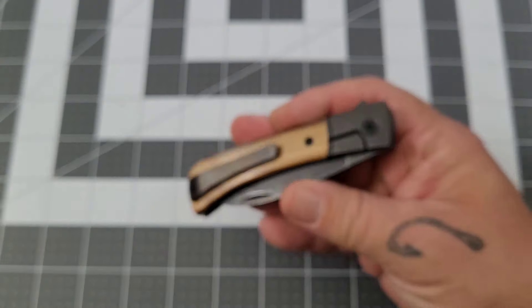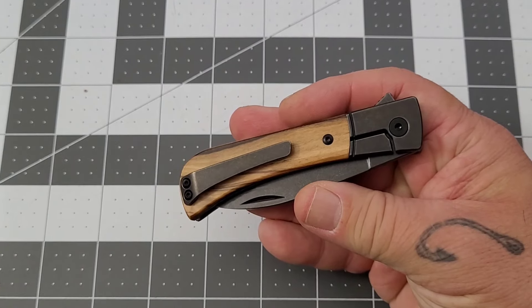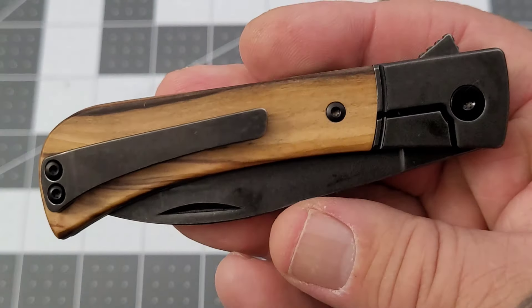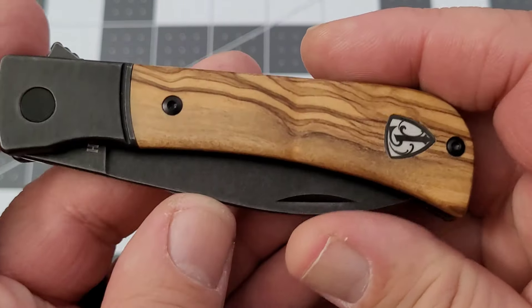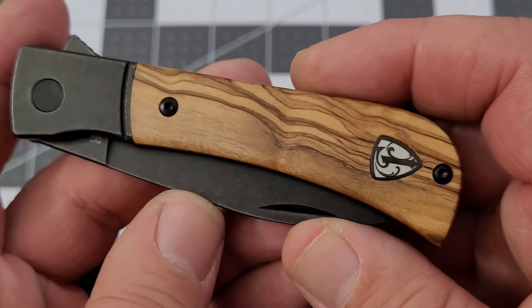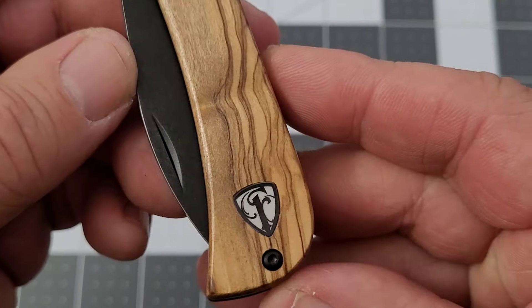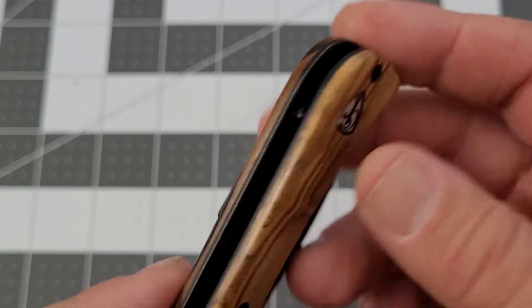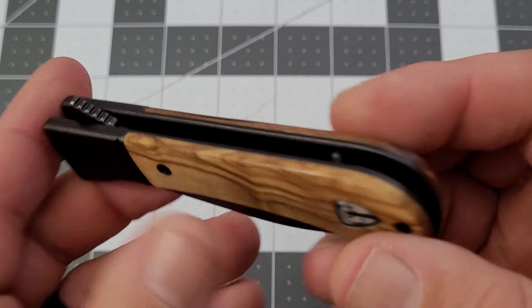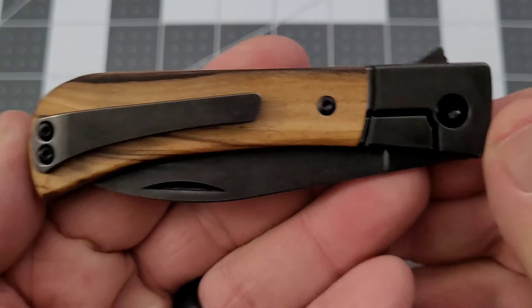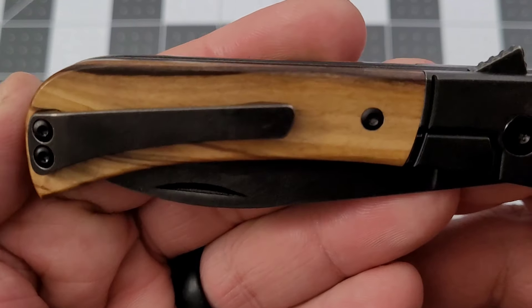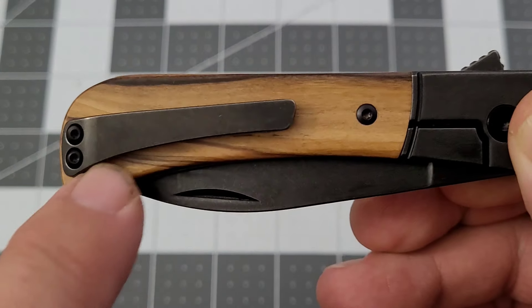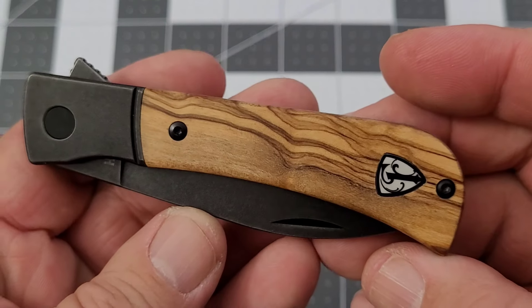Oh my goodness. That is olive wood. You know what, we are going to zoom in a bit. Oh my goodness, would you look at that. Look, the grain on the show side is absolutely fabulous. Now they moved the shield down a little bit. Very cool. Open construction, right hand tip up carry only pocket clip. That olive wood looks so good.